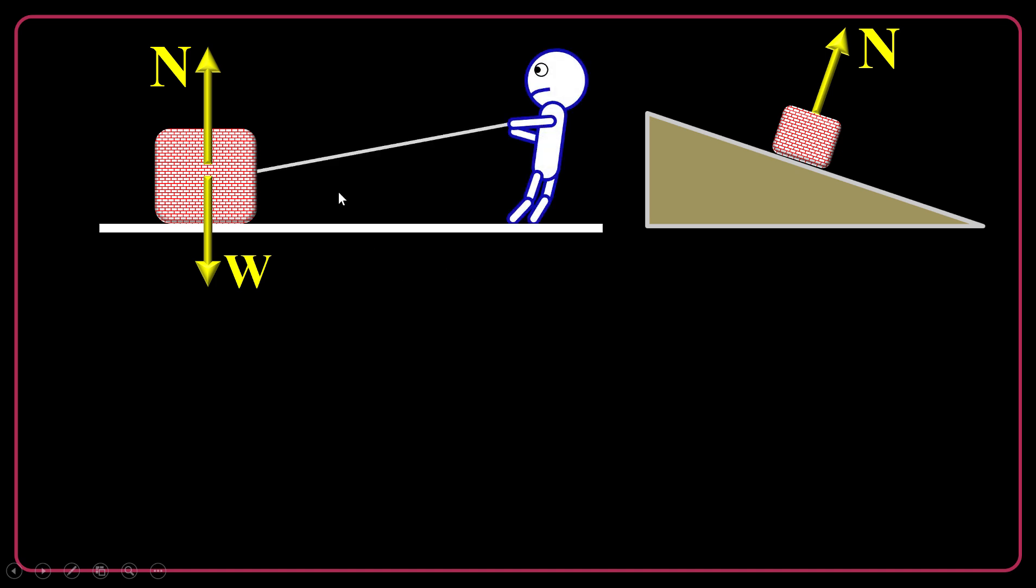The other is tension of the rope. Suppose that you are pulling an object via a rope, a string. The rope is under a tension, and so this force is called tension.